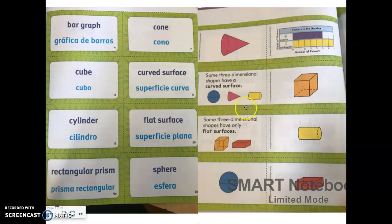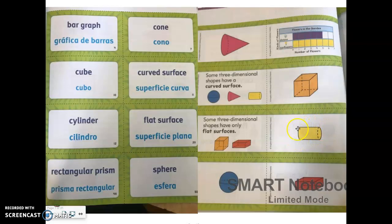The next thing I wanted to talk about was flat surface. A flat surface is just like you might see on a table — it is flat. This cube has all flat surfaces all around it; there's nothing round or curved in a cube. The cylinder has a flat surface on this side and on this side. The cone also has a flat surface, but only on one side — the rest of it is curved.